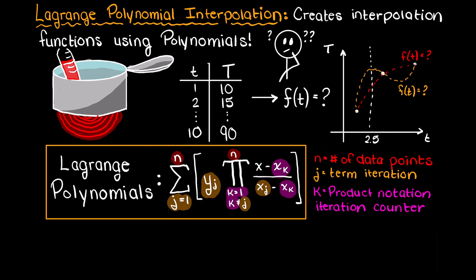And within each j iteration, we fill out that term with this large capital pi, which denotes product notation, meaning for every iteration we will have a new item, and we track that with the iteration counter k.